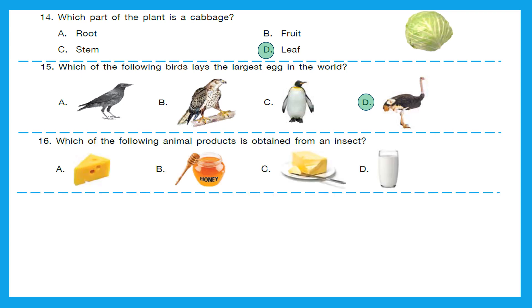Question 16: Which of the following animal products is obtained from an insect? The first option is cheese — it comes from cows or goats. Next is honey, and we get honey from bees. What are bees? They are insects. Option C is butter, again coming mostly from cows. Option D is milk. The right answer is option B, honey, because we get it from an insect called the honey bee.